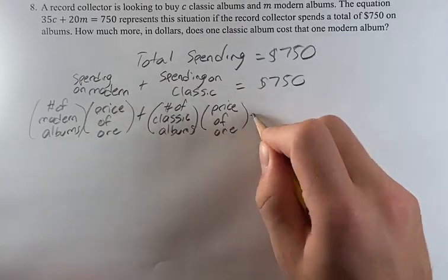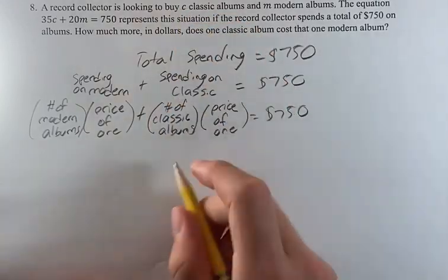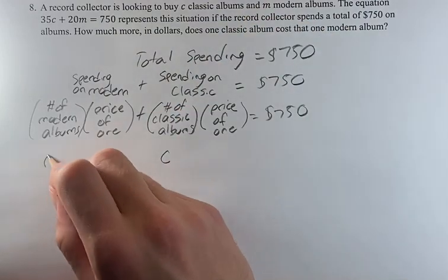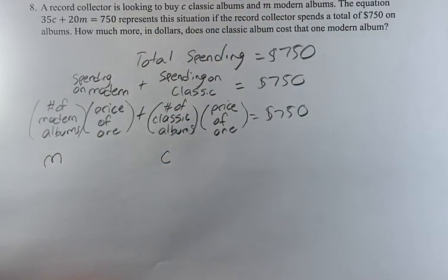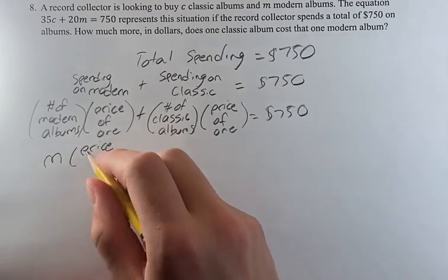Now we know what our variables are in this situation. He has C classic albums, so that's this C right here. He has M modern albums. That's this number right here. And somehow this is going to have to get us to the equation that's already given.